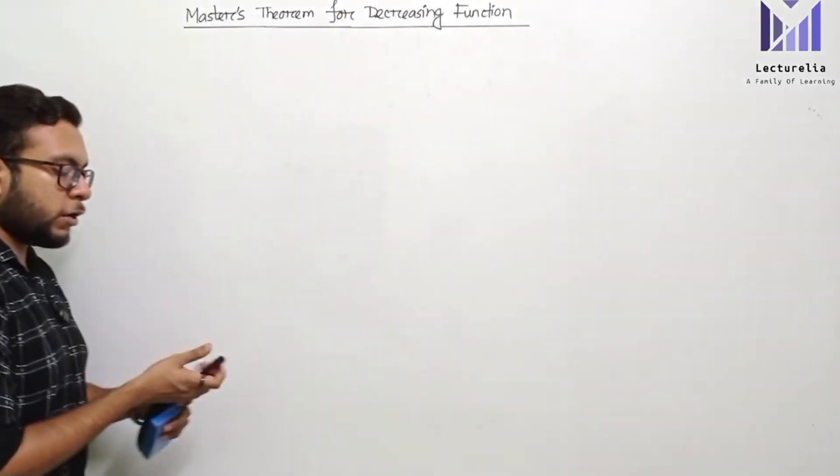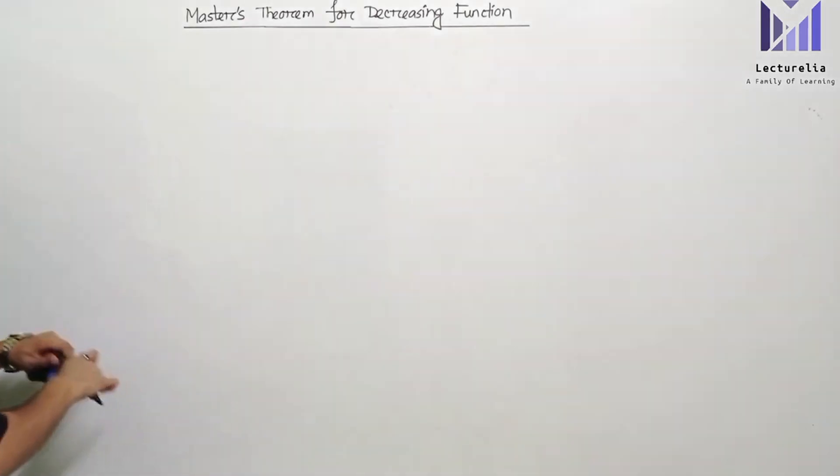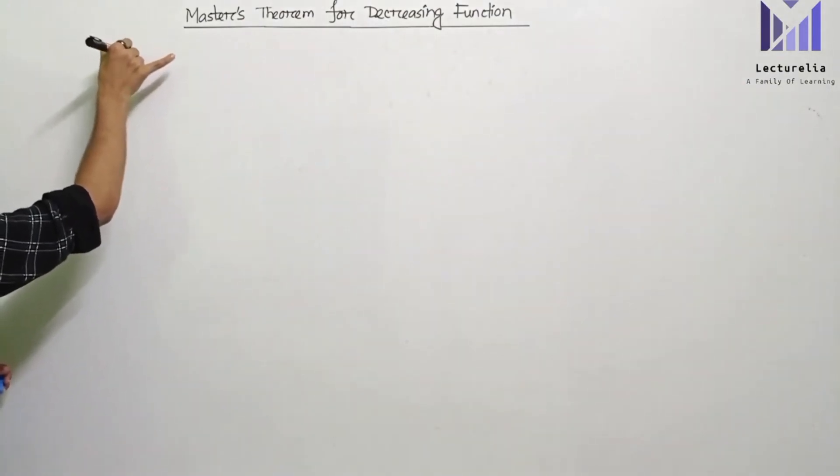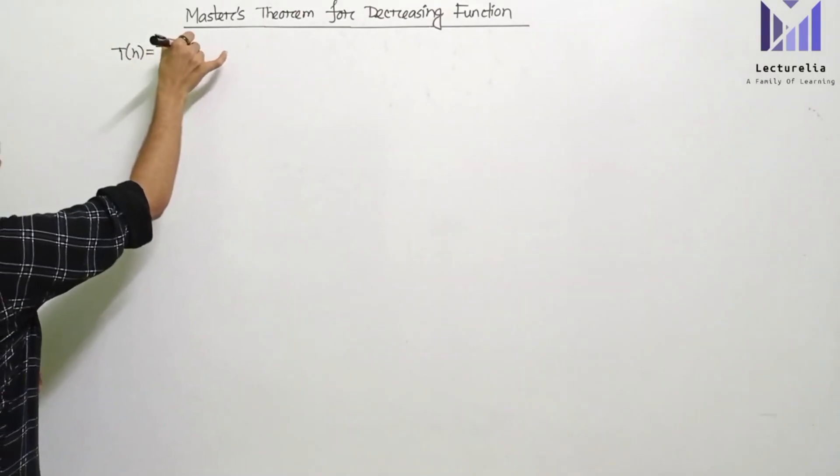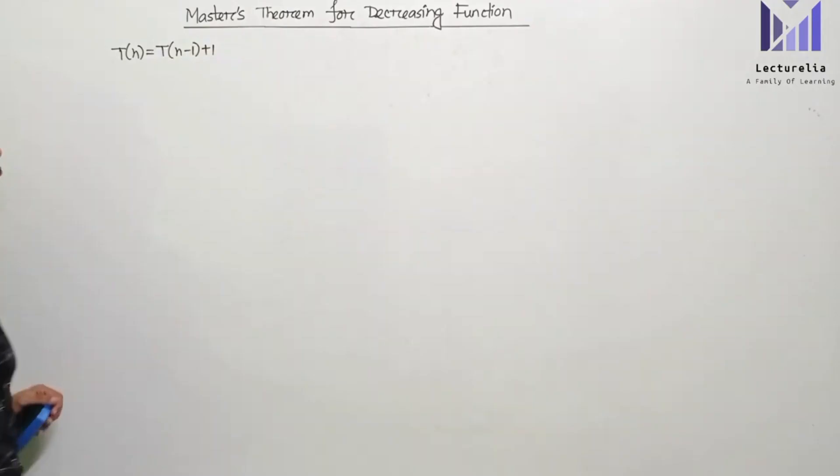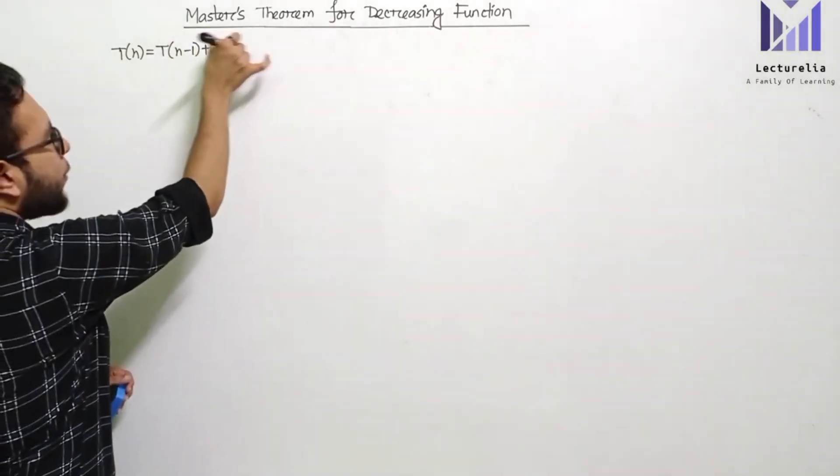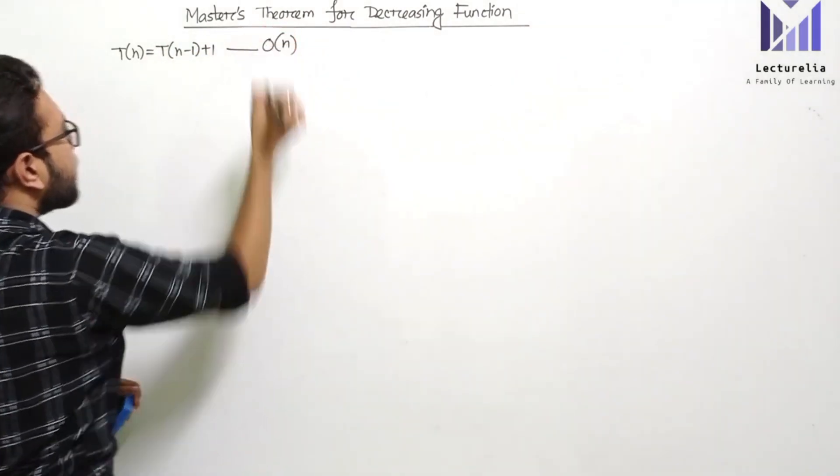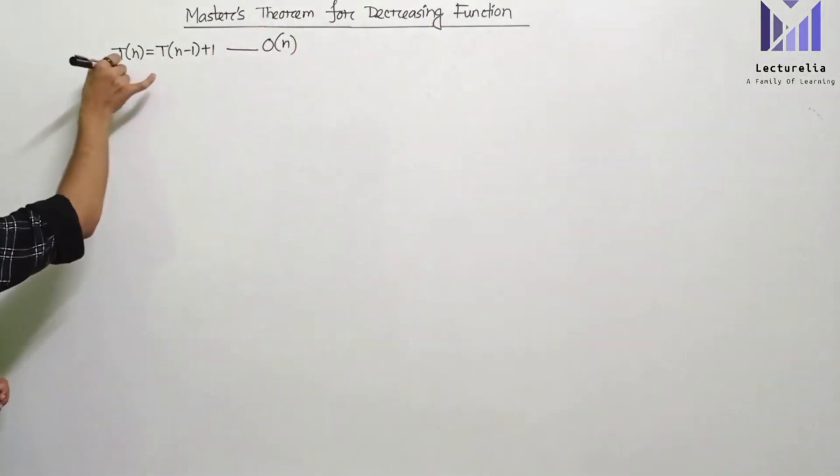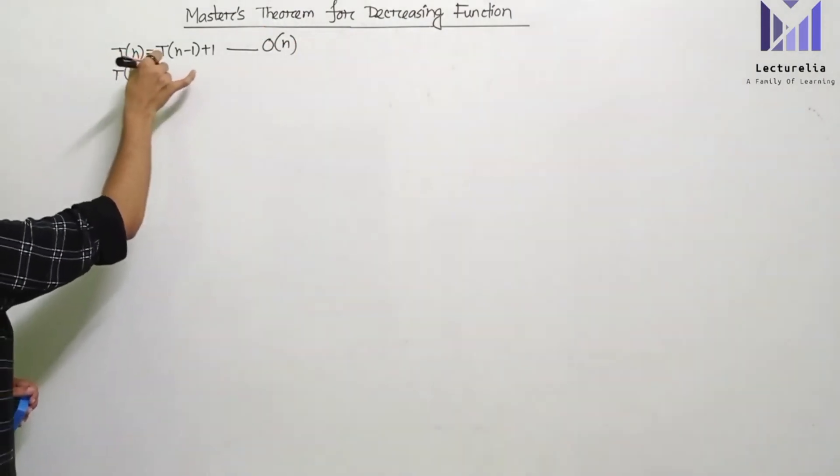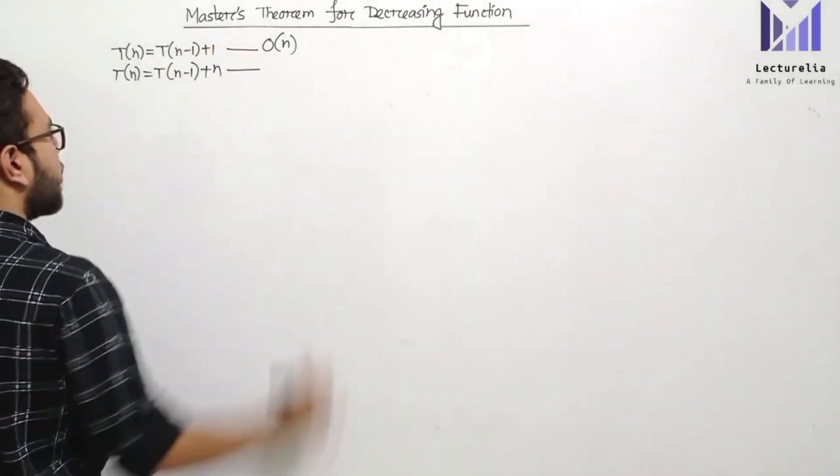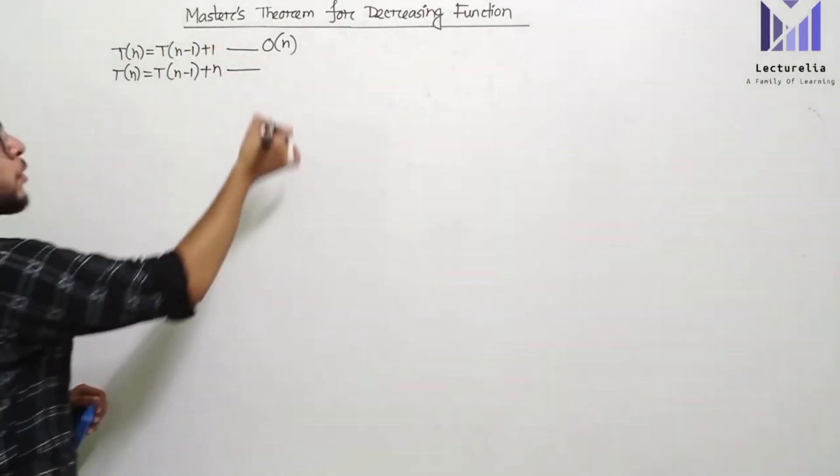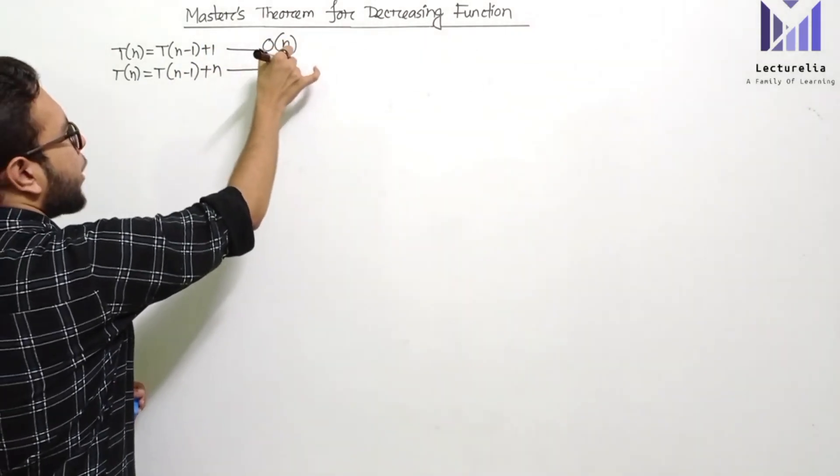In the first lecture video, we covered recurrence relation T(n) = T(n-1) + 1, and we found the time complexity is order of n. In the next lecture video, we covered T(n) = T(n-1) + n, and we found the time complexity is order of n squared.